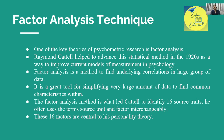The factor analysis method is what led Cattell to identify 16 source traits — he often uses the terms source trait and factor interchangeably. Gordon Allport had identified around 4,000 traits, many of which were redundant, repetitive, and overlapping. Cattell reduced these first to 71, and then further down to 16. These 16 factors are central to his personality theory and are the basis of his famous questionnaire.